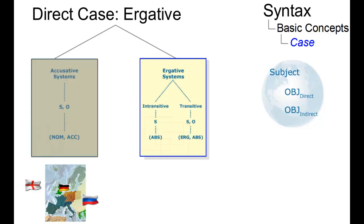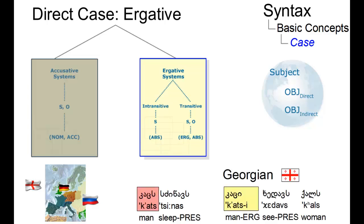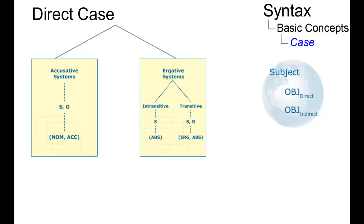The ergative case-marking system, by contrast, draws a distinction between the case-marking of the subjects of intransitive and transitive verbs. The Caucasian languages, for example Georgian, typically use ergative case systems.